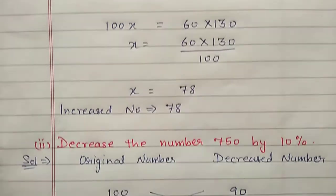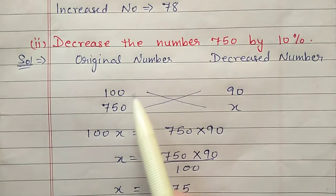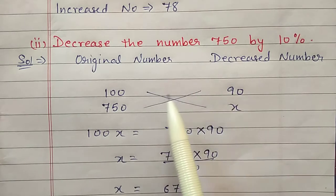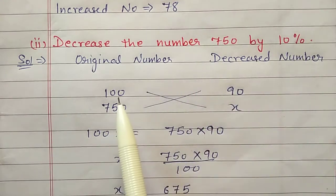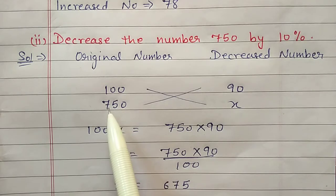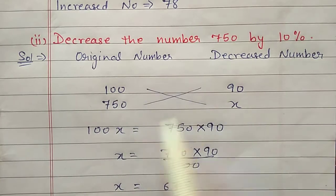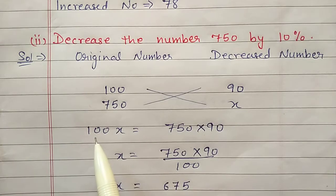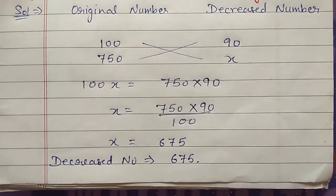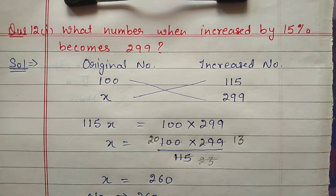Second part: decrease the number 750 by 10 percent. Suppose the original number is 100 and after decreasing 10 percent it will become 90, because 10 percent of 100 is 10. According to the question the original number is 750, so let after decrease it become x. Cross multiply: 100 and x come together, 750 and 90 come together. Shift 100 to the other side, cancel the zeros — 75 into 9 gives 675. So the decreased number will be 675.